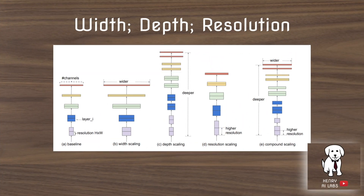So these are the three dimensions they're looking at with respect to scaling up CNNs: width scaling, meaning adding more feature maps at each layer; depth scaling, adding more layers to the network; or resolution scaling, increasing the resolution of the input image.